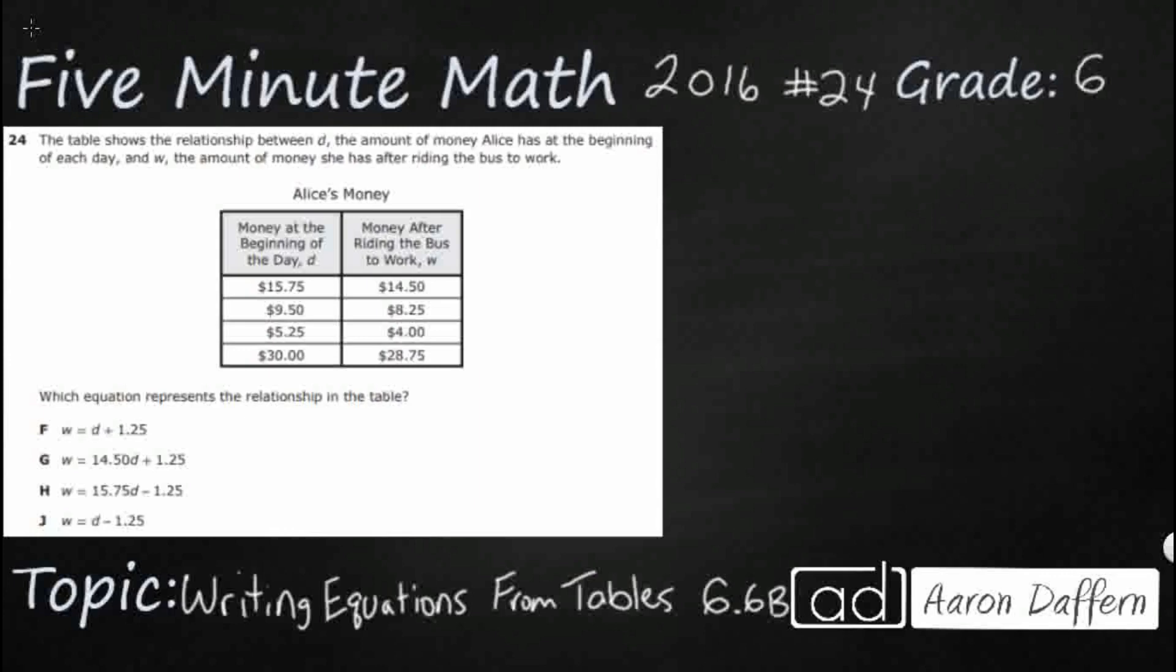So our table here shows the relationship between D, that's the money at the beginning of the day, and then W, the money that she has after riding the bus to work.